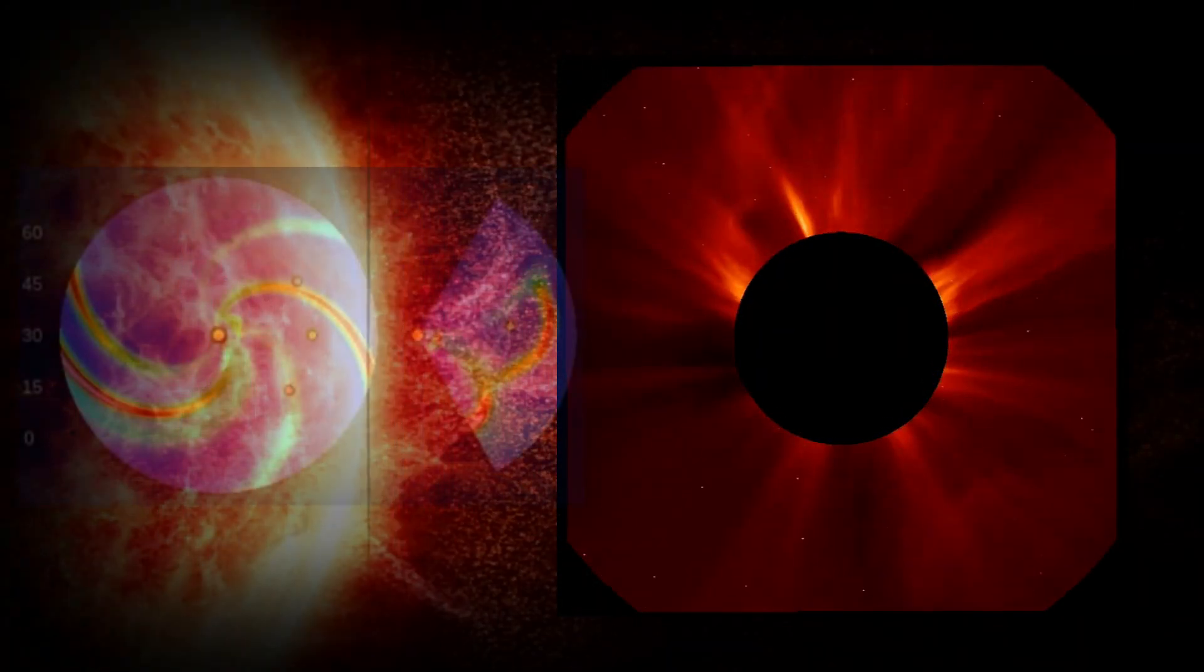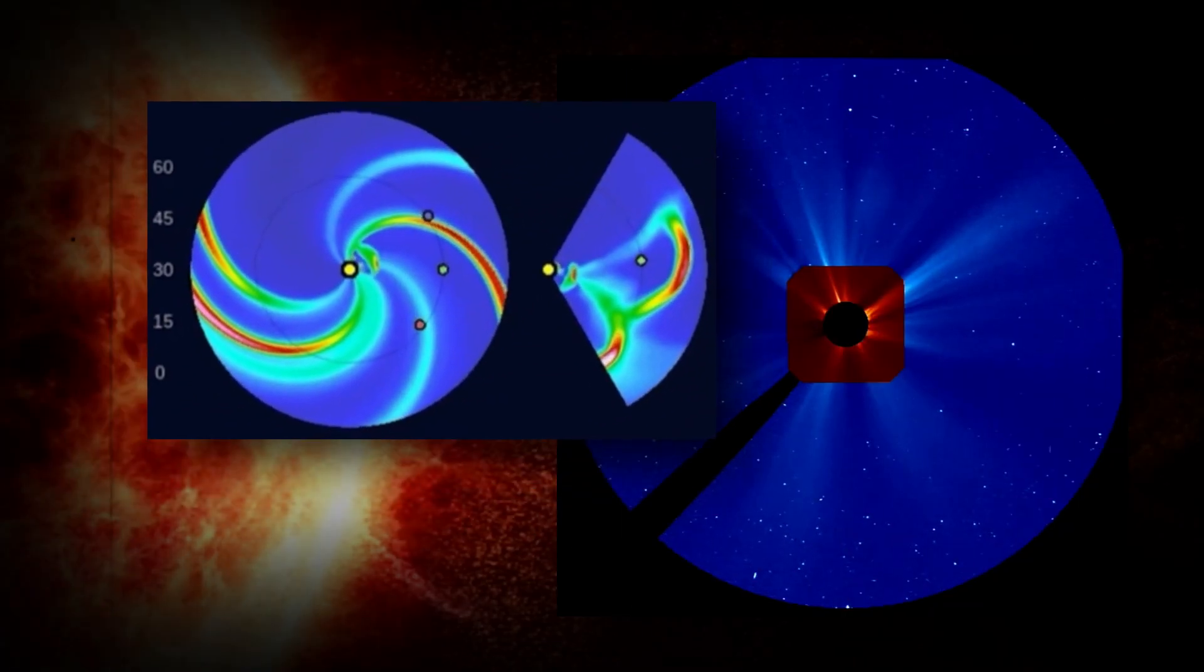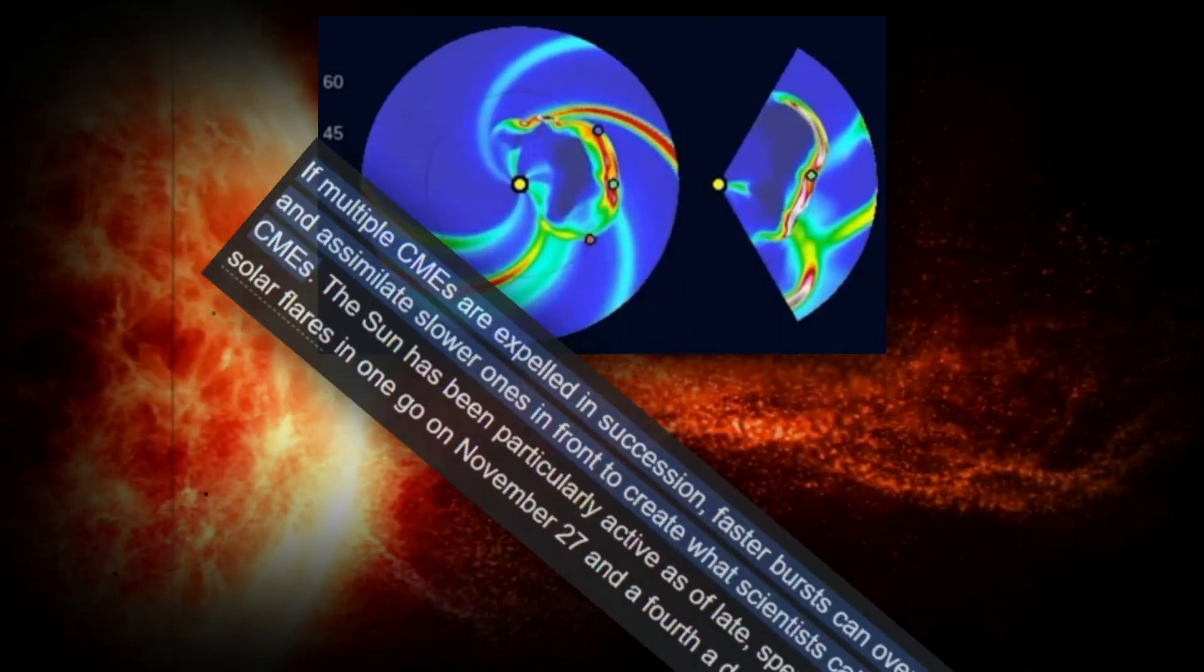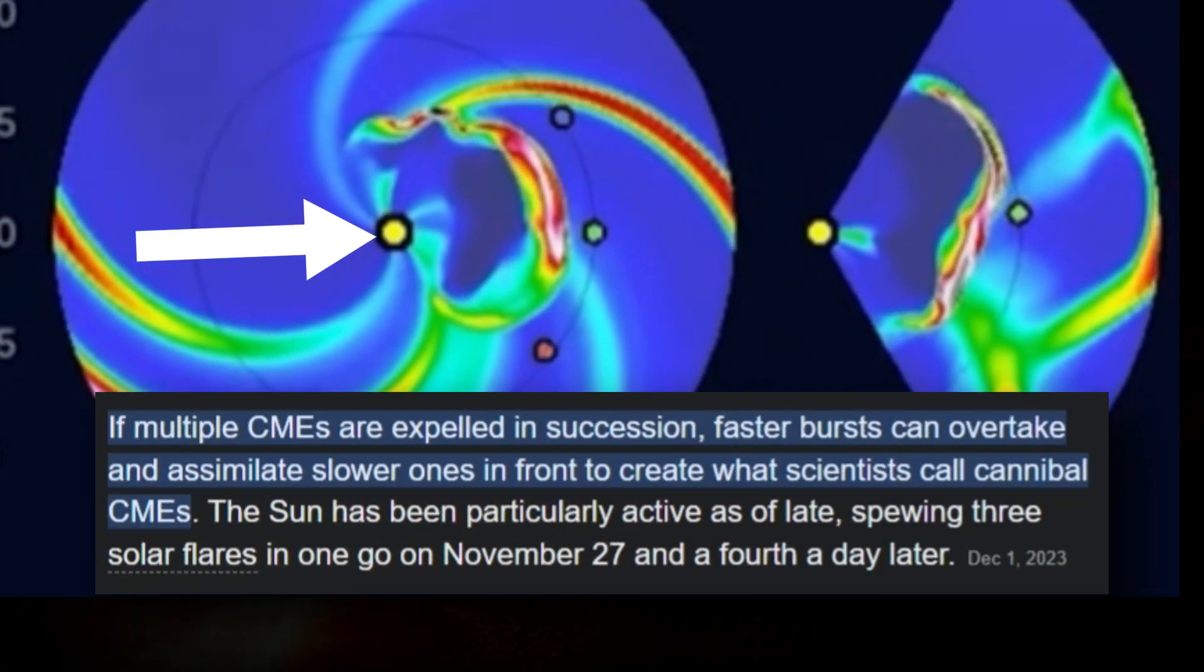So first things first, what is a cannibal CME and how does it affect the Earth and us? In a nutshell, the definition is this: if multiple CMEs are expelled in succession, faster bursts can overtake and assimilate slower ones in front to create what scientists call cannibal CMEs.